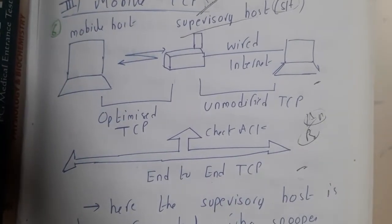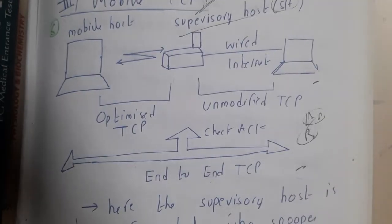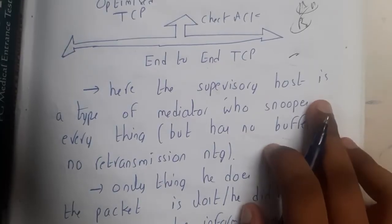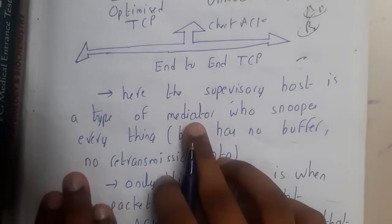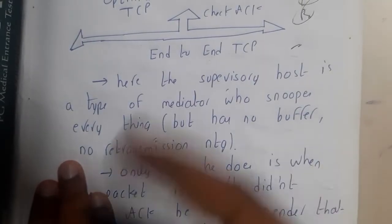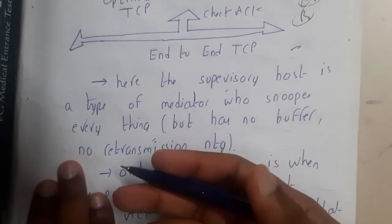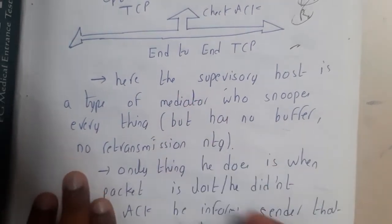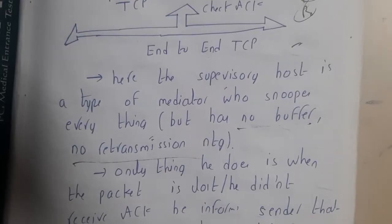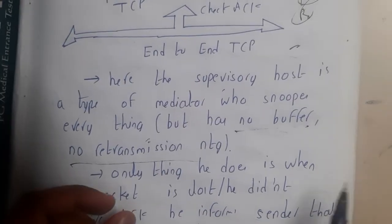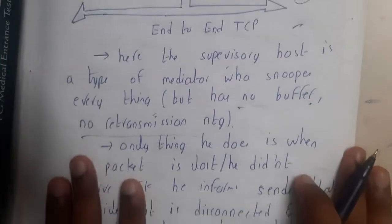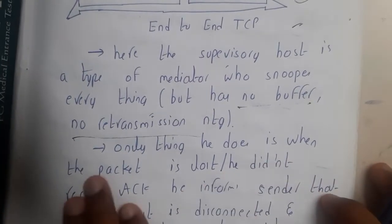The buffering concept has been removed. The Supervisory Host is a type of mediator who snoops everything — it checks everything, which is why we gave the name 'supervisor.' But it does not have any buffer and it does not retransmit anything. It is not storing anything and not retransmitting anything; it is just an observer. That is why it is called a supervisor.